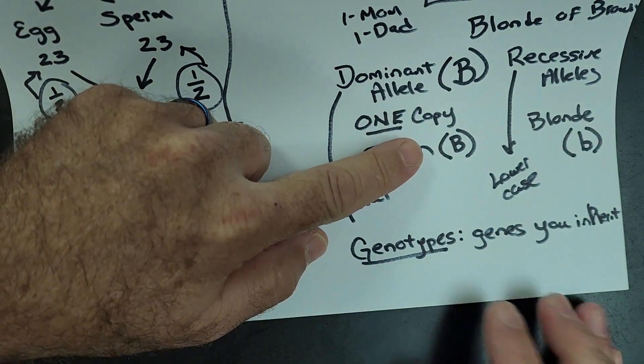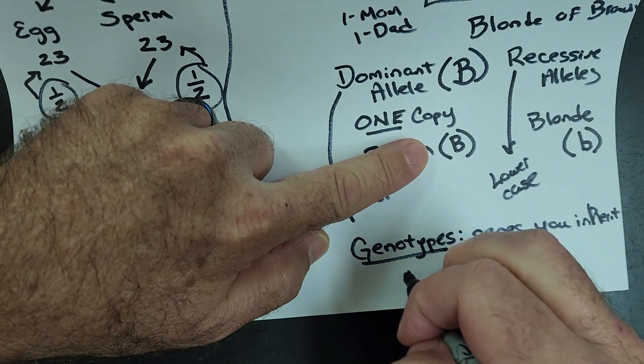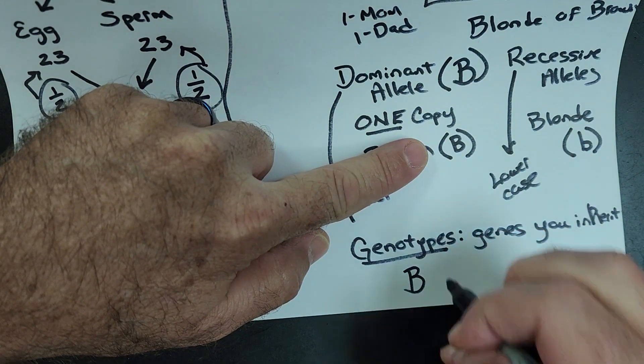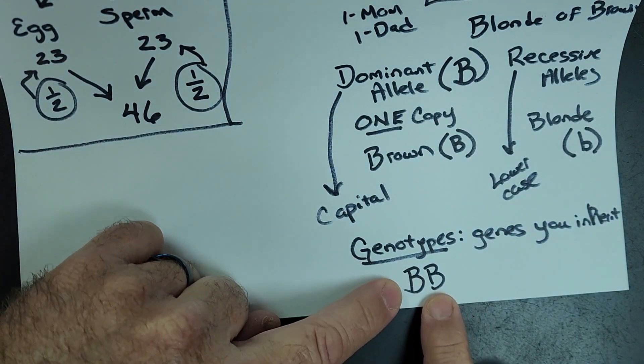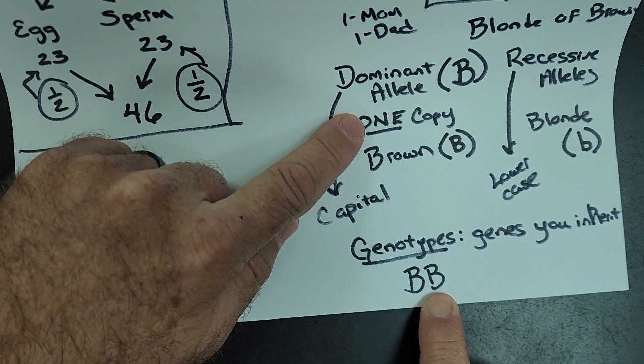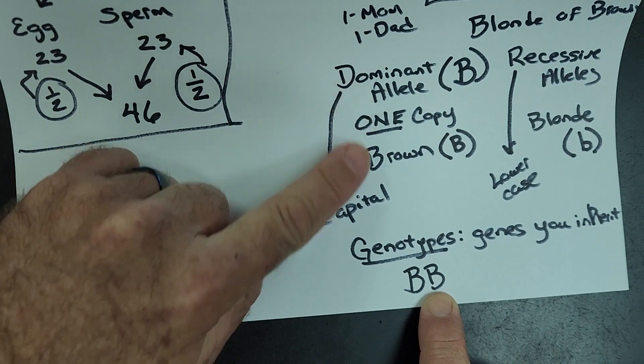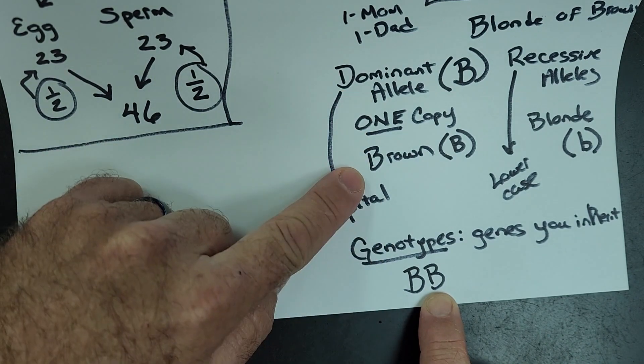Remember, one from mom, one from dad. Your mom could give you a capital B. Your dad could give you a capital B. That's one possible genotype. And because you have at least one copy of this dominant allele, this person has brown hair.